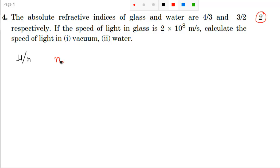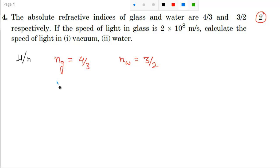So refractive index for glass, ng, equals 4/3, and refractive index for water, nw, equals 3/2. The speed of light in glass, vg, is given as 2×10⁸ meter per second. We have to calculate c, the speed of light in vacuum, and vw, the speed of light in water.